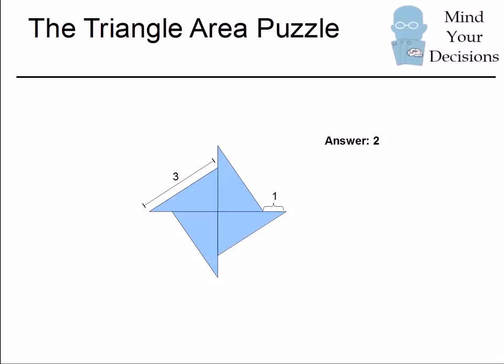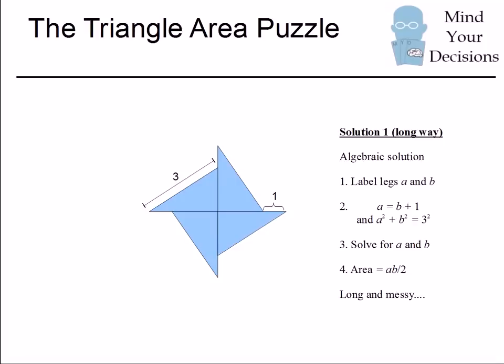One way you can solve this is you can work algebraically. This is the long way to solve the problem. The steps involved are you would label the two legs of the triangle as A and B. You can then set up a system of equations. One equation will be that A is equal to B plus 1 because we know one of the legs is one unit longer than the other.